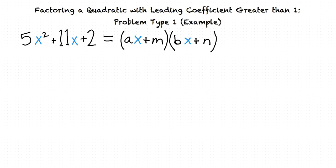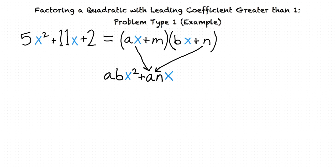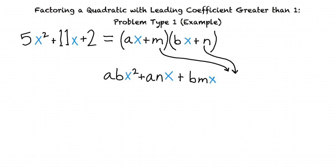If we use the FOIL technique, our first step is to multiply the first term in each binomial: ax times bx gives us abx². Next, multiplying the outer terms gives us anx, the inner terms give us bmx, and finally multiplying the last terms m and n gives us mn.